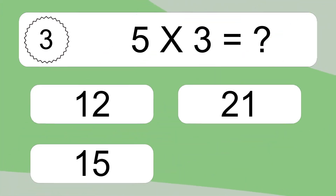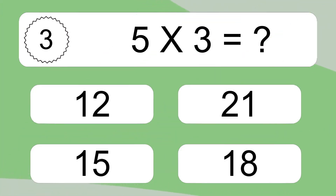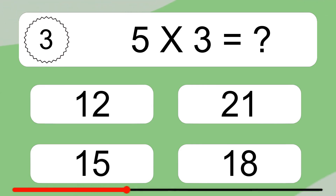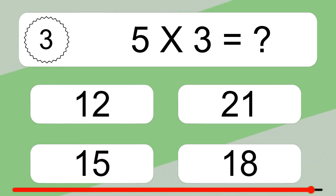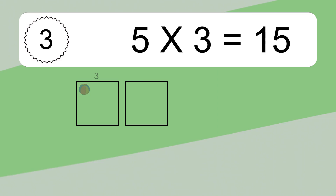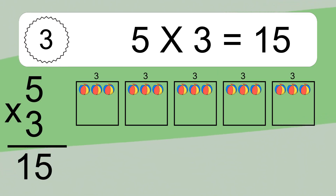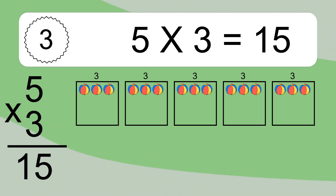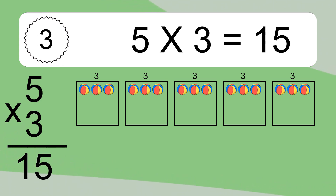5 times 3 equals what? 5 times 3 equals 15. We have 5 boxes, and each box has 3 colorful balls inside. If you count all the balls in all the boxes together, you will have 5 times 3 balls. This equals 15 balls.